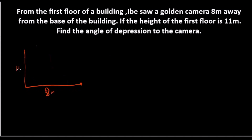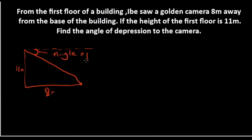Ibe is actually standing on the building that is 11 meters. Ibe has an eyesight — let's assume this is Ibe's eyesight. Ibe is now going to tilt his eyes a little bit to see this camera here. Ibe has tilted his eye through this angle. This is the angle of depression — the angle at which Ibe had to look down to see the camera down here. For me to calculate this angle, I already have my triangle.